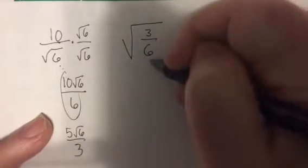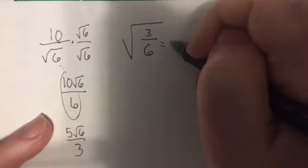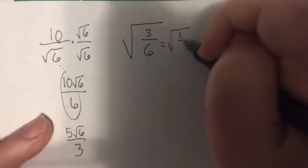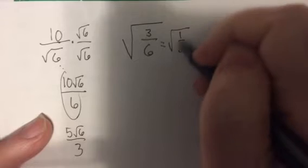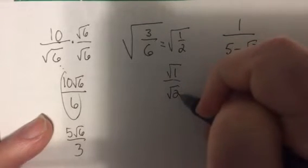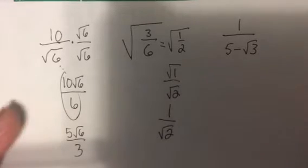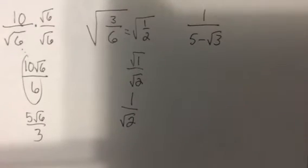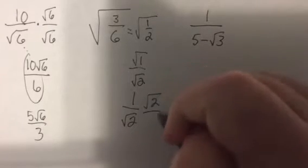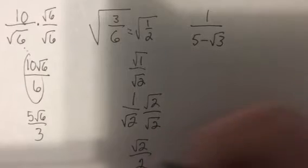This one, let's reduce before we start. This would be the square root of 1 half. But if I have a fraction, I can do square root of 1 over square root of 2, which is 1 over square root of 2. But I can't have a radical in the denominator, so I'm going to multiply the top and bottom by square root of 2. So, it'll be square root of 2 over 2.